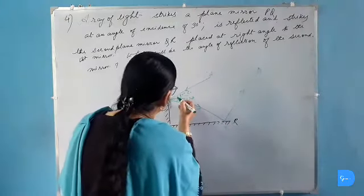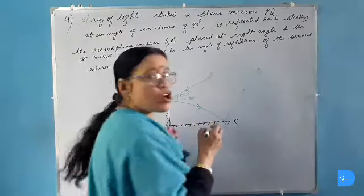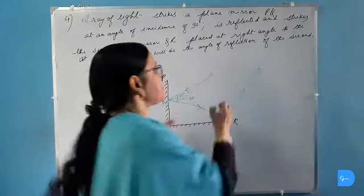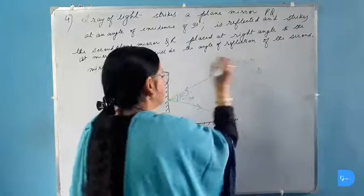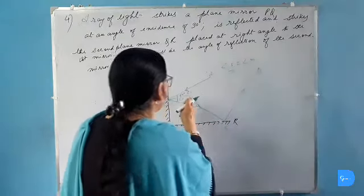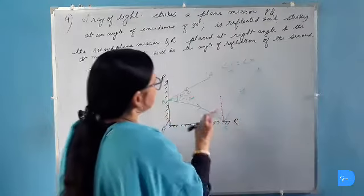This angle of incidence is 30 degrees, it is given. So angle of reflection here is also 30 degrees because according to the law of reflection we know that angle I is equal to angle R.